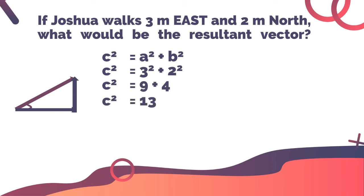Then it would be 9 + 4 and c² = 13. Now we need to eliminate the square on c. Therefore, we need to get the square root of both sides. So √c² = √13. Therefore, c = 3.61 meters. That would be the value of the resultant vector.